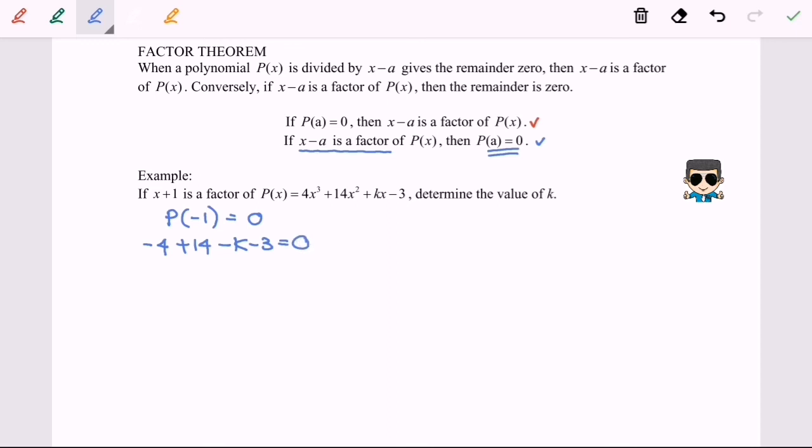Simplifying, we have 7 minus k equals zero.